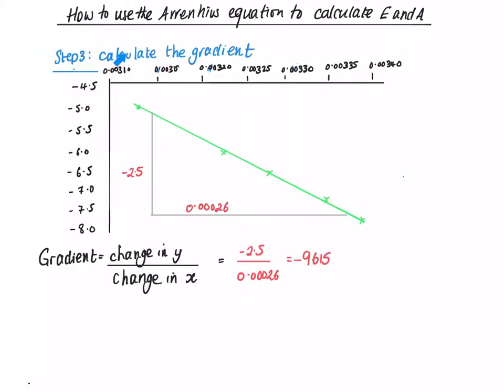So we need to calculate the gradient, and the gradient is the change in Y divided by the change in X. From this we get the change of Y is minus 2.5. The change of X, measured along that axis, is 0.00026, and putting that in our calculator, we get the answer to be minus 9615.